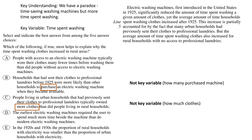Wrong answer D: the earliest electric washing machines required users to spend much more time beside the machine than do modern electric washing machines. You might think this finally talks about time spent washing — but it's a false comparison between 1920s and modern washing machines. That debate isn't what we're having. The question is about rural households in the 1920s, not a comparison to modern machines. It uses the correct key variable but introduces a false comparison.